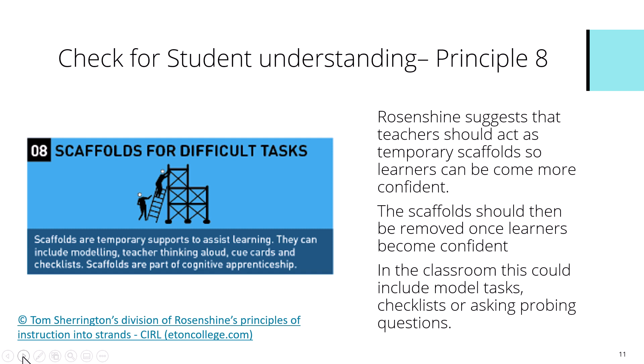Principle eight is providing scaffolding for difficult tasks. In Pearson qualifications, for example, there's nothing wrong with scaffolding and demonstrating tasks as long as learners don't copy it directly into their assignment — it should be used for practice. Rosenshine suggests using temporary scaffolds that allow learners to become more confident, then gradually removing them so learners move towards independence. In the classroom this could include modelling tasks, providing checklists, or asking probing questions to deepen understanding.